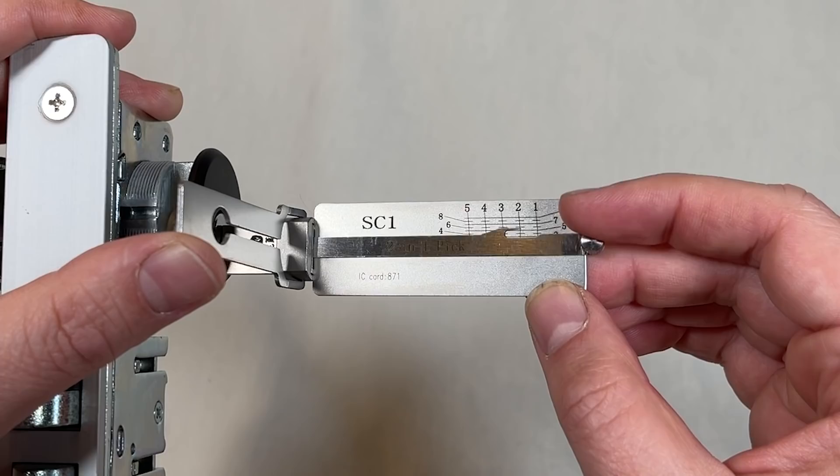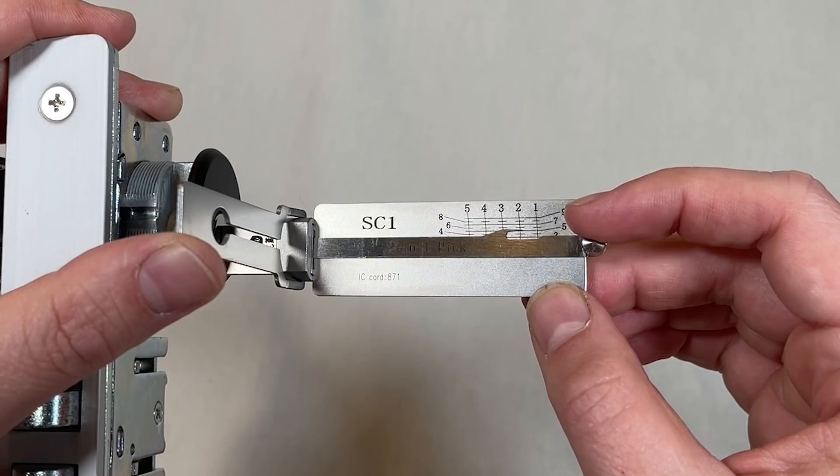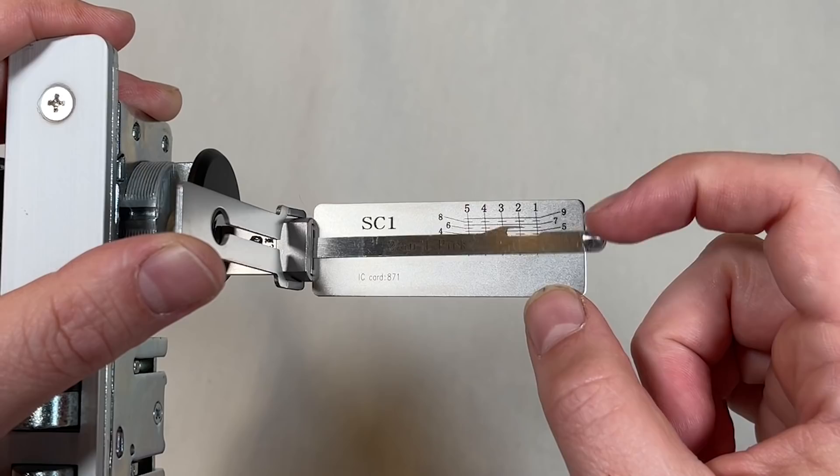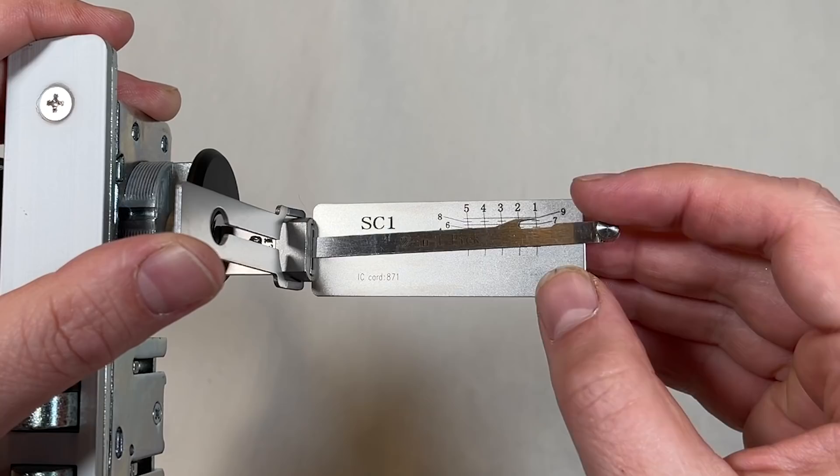How about the second chamber? We're working our way towards the front of the lock. Ooh, I got a nice little click there. And again, what do we got here? If I push it a little hard, I can get down to about the five and it bounces up to almost the seven. Good bounce right there. That is a set pin.